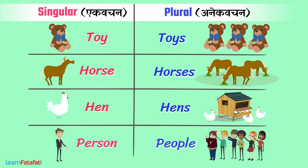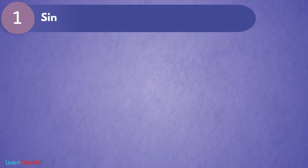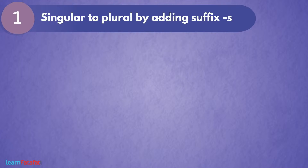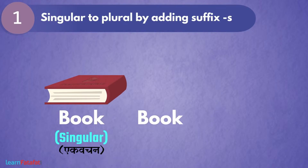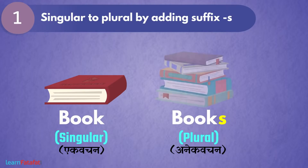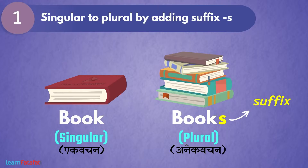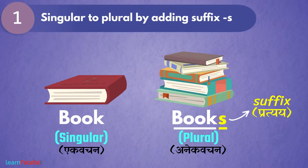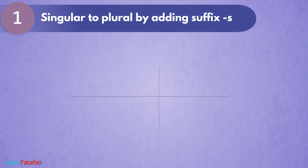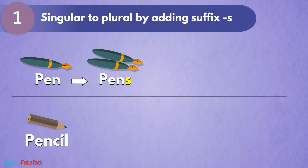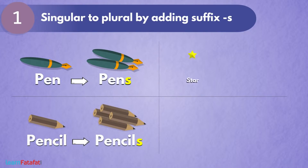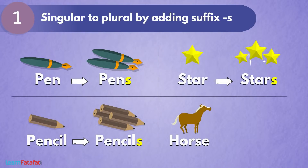Singular to plural by adding suffix -s. Book इस singular word को अगर -s suffix जोड़ते हैं तो इसका plural word बनता है books। Suffix याने की प्रत्यय वे होते हैं जो शब्द के अंत में जोड़कर शब्द के अर्थ में परिवर्तन करते हैं। काफी सारे singular noun को plural बनाने के लिए हम -s suffix यूज़ करते हैं। जैसे pen का plural pens, pencil का pencils, star का stars, horse का horses।